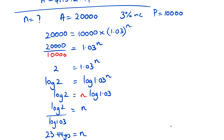So for the money to double from $10,000 to $20,000 at that current interest rate, it's going to take 23 years. That's a long time! Of course, in real life you also have to pay tax, which means you're probably going to lose another 0.65 depending on your tax rate. If you're in the highest bracket, you might only get 2%, which makes things even worse.